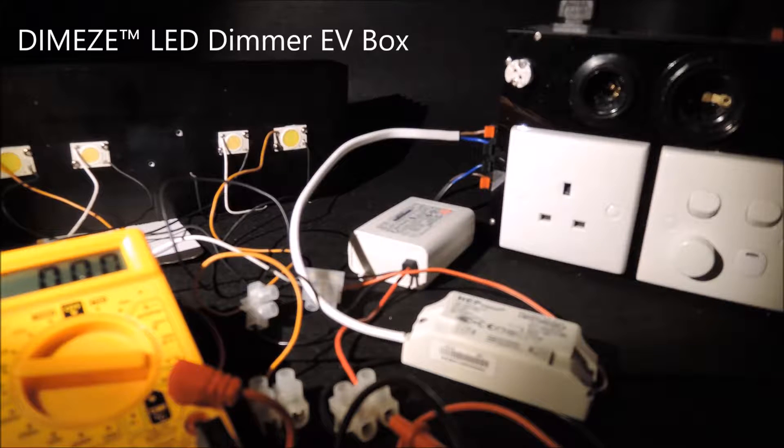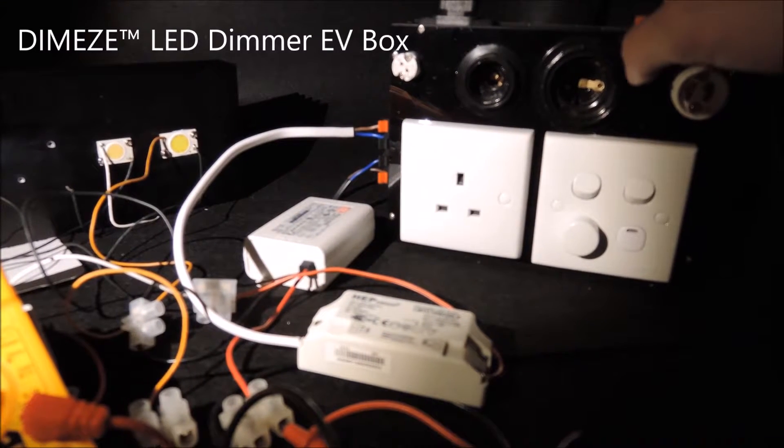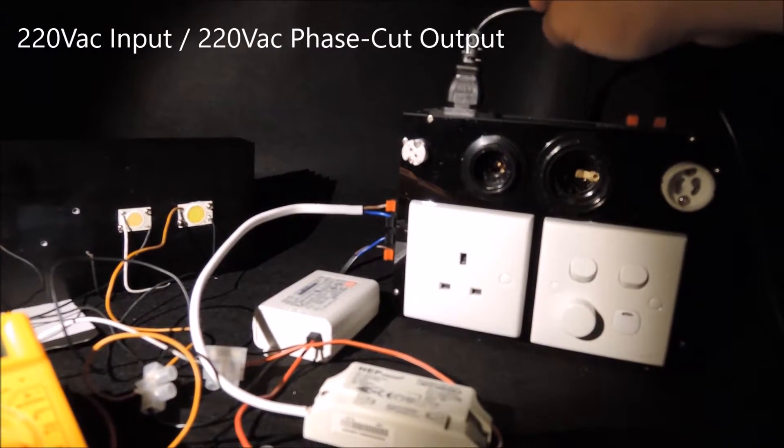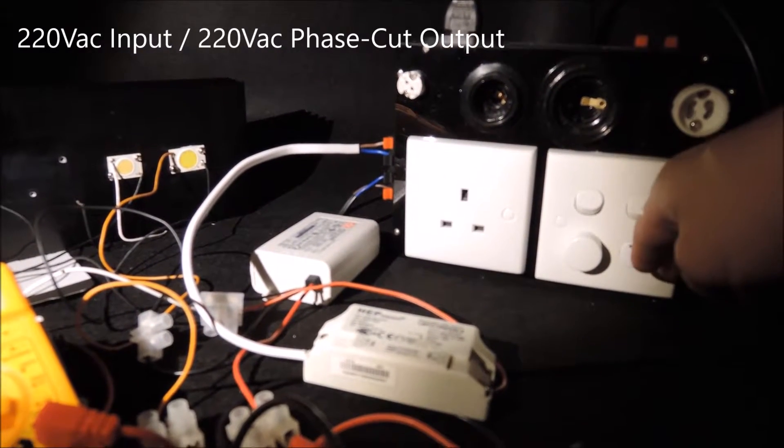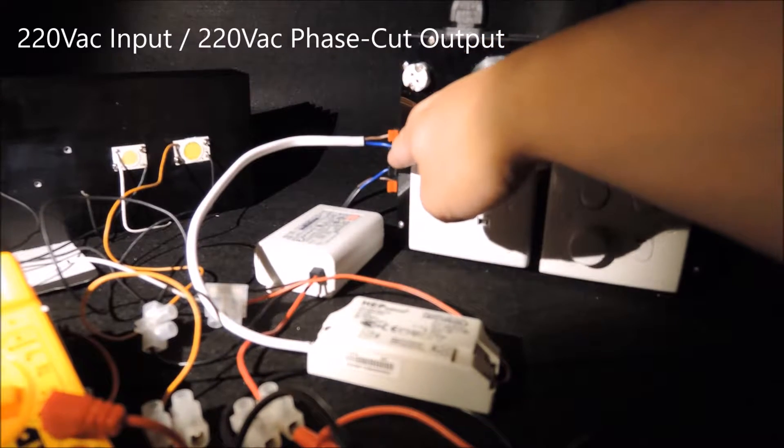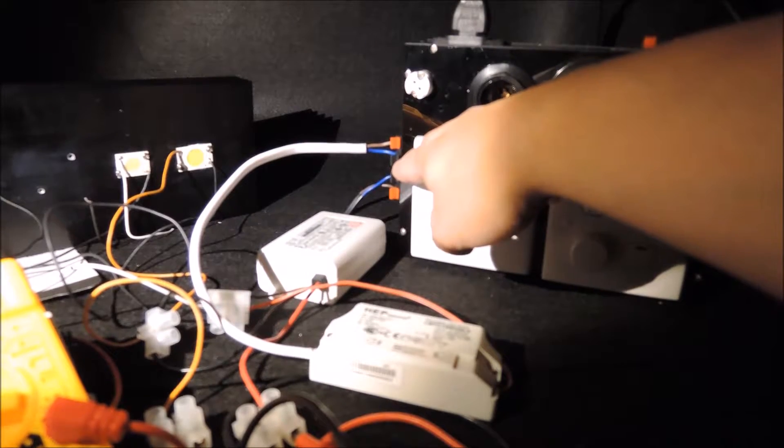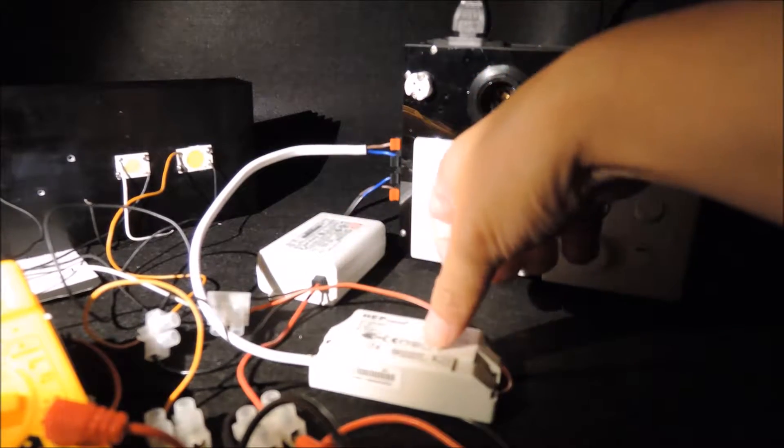We have our DimEasy LED dimmer evaluation box, 220V AC coming in, being processed by our dimmers, which then produce a 220V phase cut output to the dimmable LED drivers.